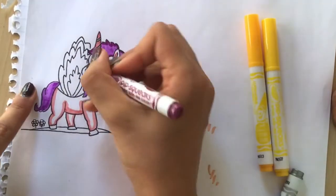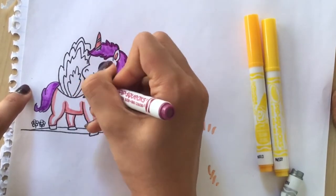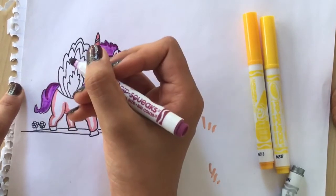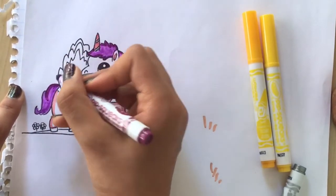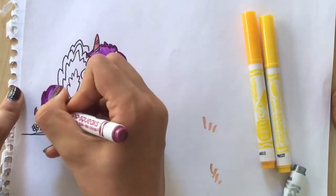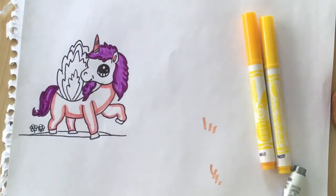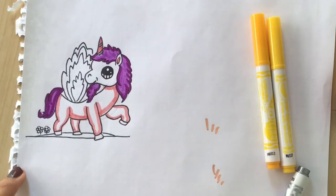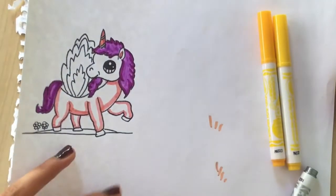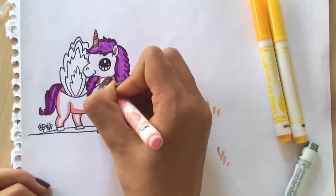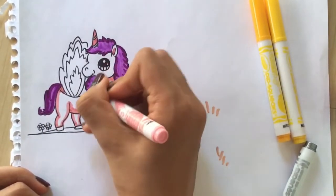We're going to start with the shadow. And then use the light pink once again, the Pinky Pink, to fully color the belly.